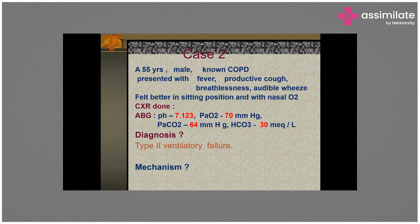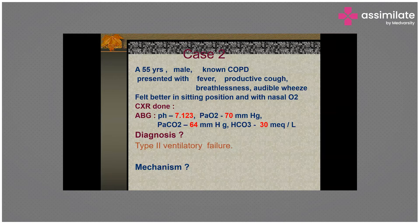Case two: a 55-year-old male, known COPD, presented with fever, productive cough, breathlessness, audible wheeze, and felt better sitting. With nasal oxygen, ABG shows pH 7.1, PO2 70, PCO2 64, and bicarbonate 30. The diagnosis is Type 2 ventilatory failure. The mechanism is CO2 buildup due to pneumonia.